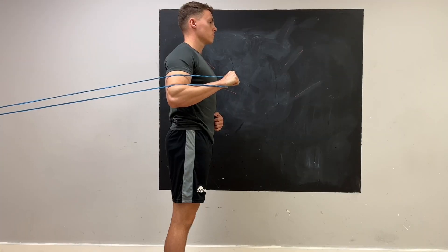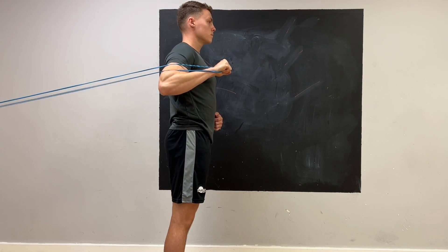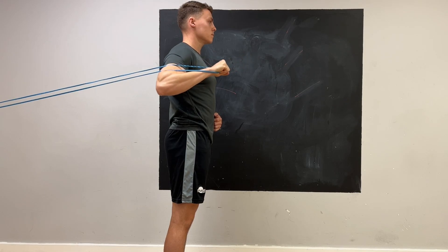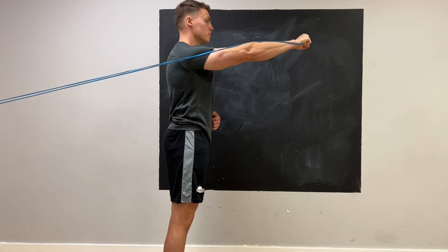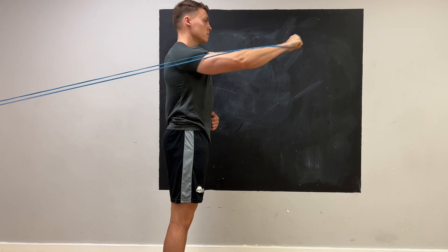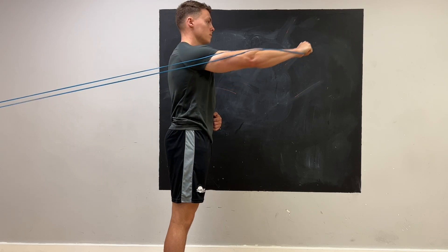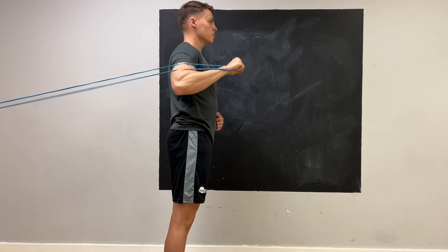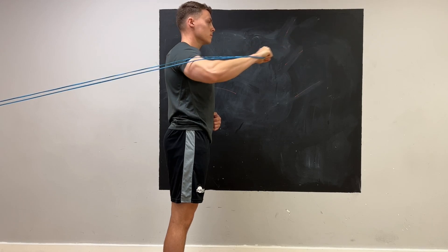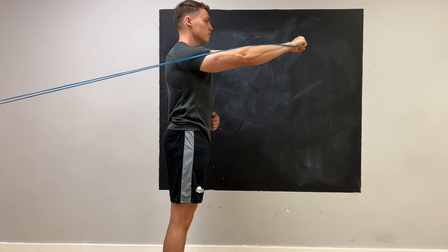The second exercise looks like a punching motion with a theraband. As serratus anterior is known as the boxer's muscle due to the forward reach required for protraction, this is a progressionable exercise to further strengthen serratus anterior, with the real focus on the protraction element as the arm and shoulder move forwards.